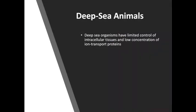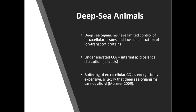Deep sea organisms, on the other hand, have limited control of intracellular tissues and low concentrations of transport proteins, making them more likely to struggle with removing hydrogen ions. Buffering extracellular CO₂ is energetically expensive, and deep sea organisms live in a slow environment with less food than the epipelagic. Many organisms enter diapause in deep water — a hibernation stage — including copepods. Very low or very high metabolism could both pose more risk from ocean acidification.